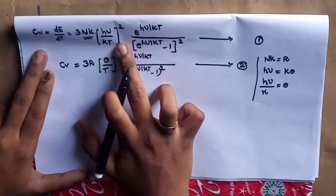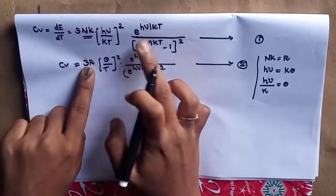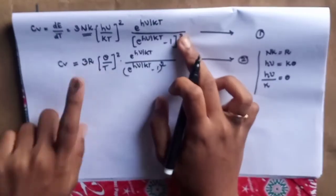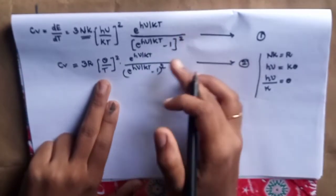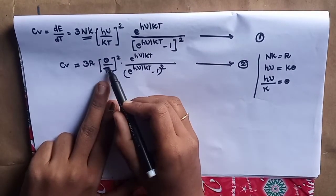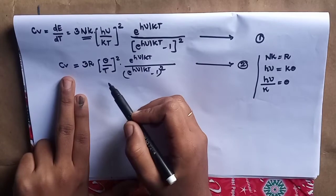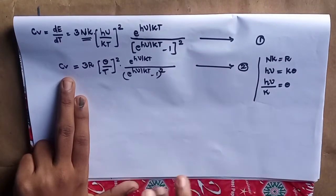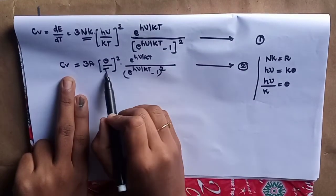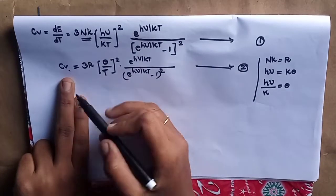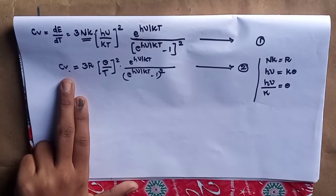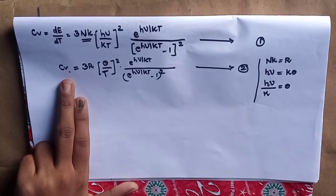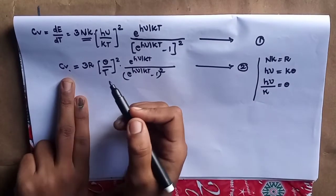We will use this equation, substituting nk equal to R. Temperature depends on the atomic heat of solids. We will see how to change the equation for higher temperature and lower temperature — this is the specific heat of atoms. How to handle Case 1 and Case 2.